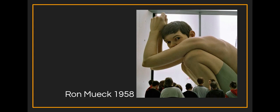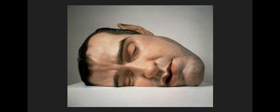Then we have Ron Mueck, who created this work in 1958. You can tell it's huge — see the people standing right in front of it. He is known for making hyper-realistic sculptures of the human form. Sometimes he makes them super big, like this one, and sometimes a little bit smaller than real life. With his art, he's making you see things differently because of the size. The expression on the person's face and how they react to people looking at them is very powerful. He also uses proportion and scale to create a larger emotional impact.